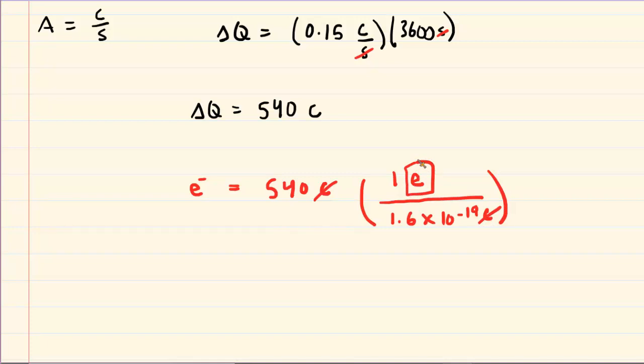We're going to divide our charge by 1.6 times 10 to the minus 19th. When we do that we can see that the number of electrons is about 3.38 times 10 to the power of 21. That will be in electrons. This is the correct answer to the question.